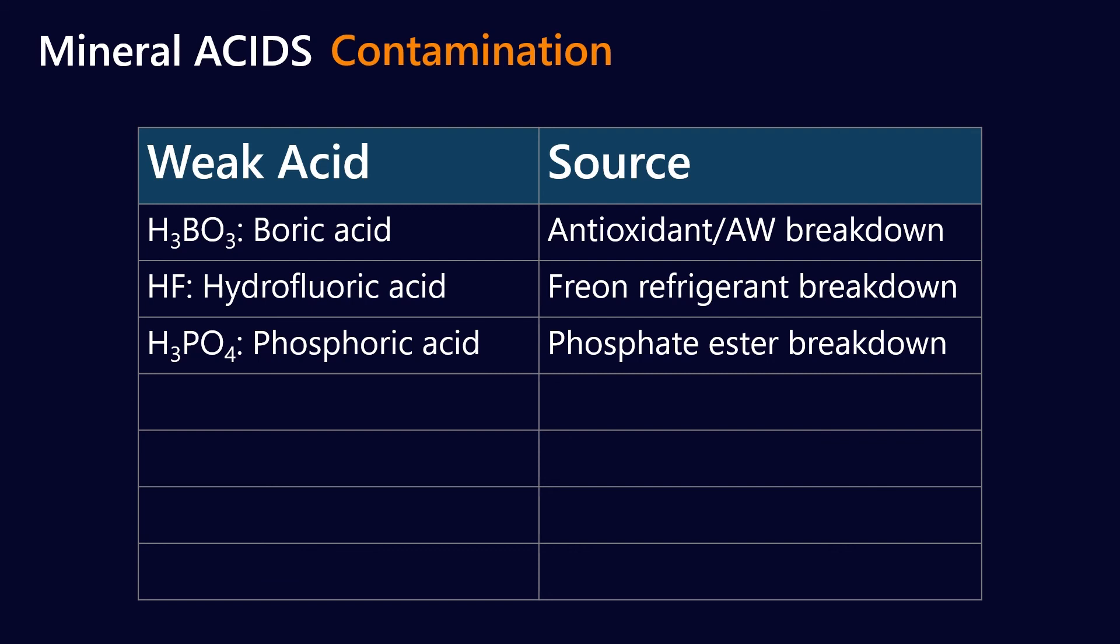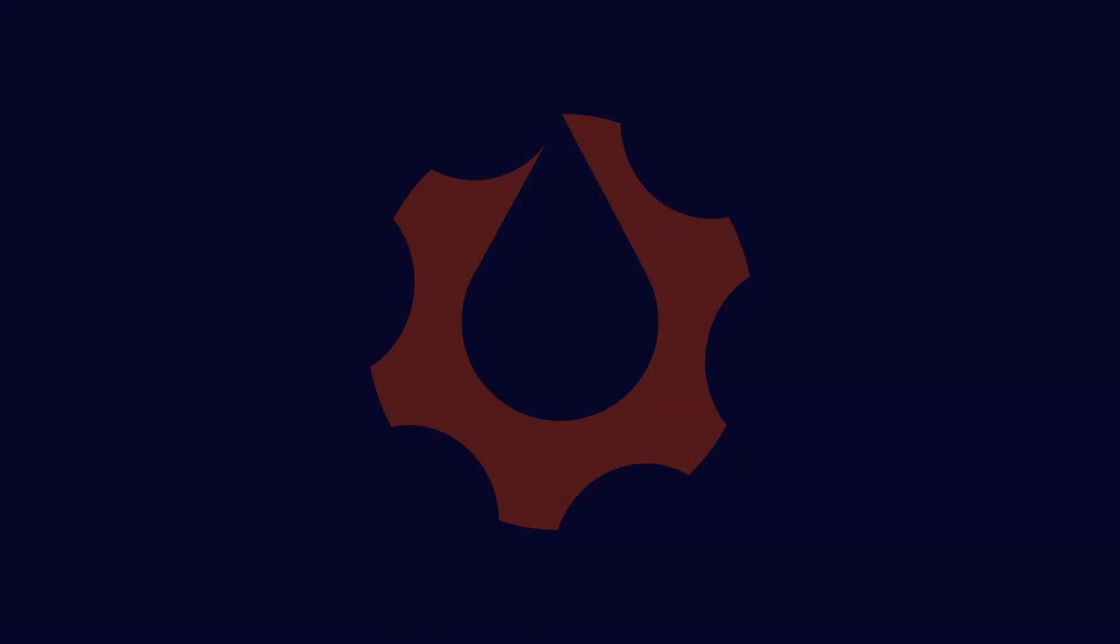So what we've talked about now is organic acids, strong mineral acids, and weak mineral acids. And again, to go back to the beginning of this discussion, think about them as coming from two separate areas. Organic acids are formed by oxidation. Strong and weak acids come as a result of contamination. So I hope that gives you a good framework for thinking about acids in lubricants.